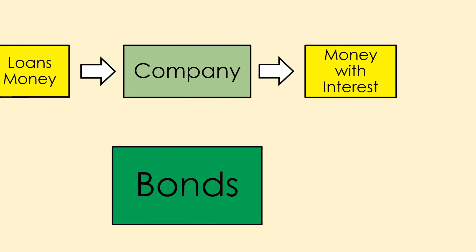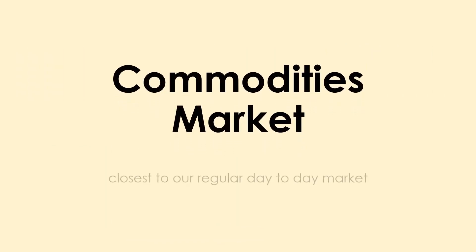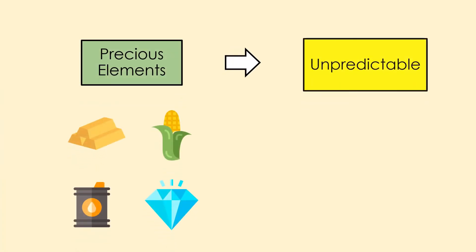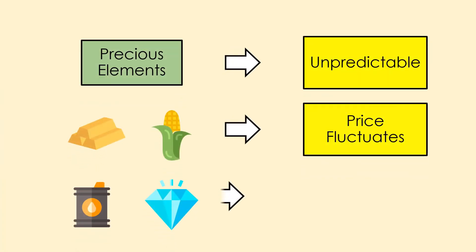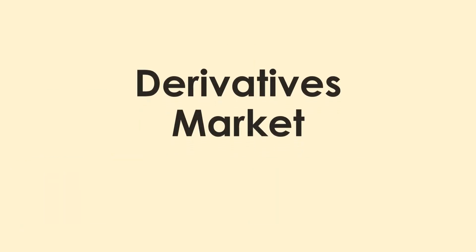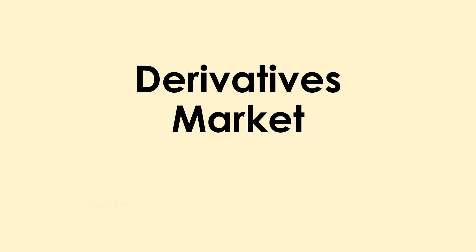The commodities market is perhaps the closest to our regular day-to-day market. In this market, precious elements or natural resources like gold, silver, oil, and meat are sold. These elements are unpredictable — their prices fluctuate all the time, just like stocks, and that's why they require a special market to be traded in.